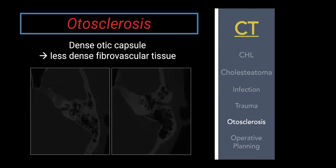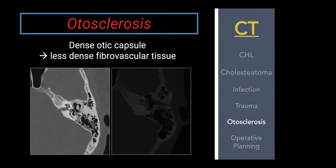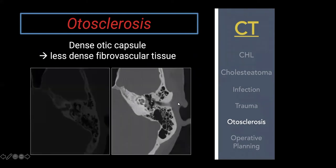Otosclerosis is a process where the very dense otic capsule — one of the densest bones in the body — has areas replaced by less dense fibrovascular tissue. Since we're measuring density, CT is excellent for this. On the left is fenestral otosclerosis: a very subtle hazy decreased density just anterior to the oval window. On the right is retrofenestral or cochlear otosclerosis, where you can see the dense otic capsule has been replaced by less dense bone all the way around the cochlea.